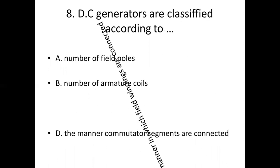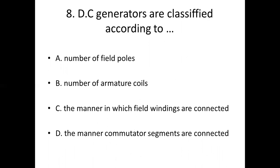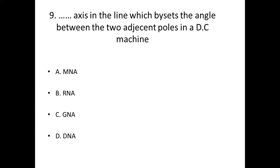Eighth bit: DC generators are classified according to — Option A: number of field poles. Option B: number of armature coils. Option C: the manner in which field windings are connected. Option D: the manner commutator segments are connected. Answer: Option C, the manner in which field windings are connected.